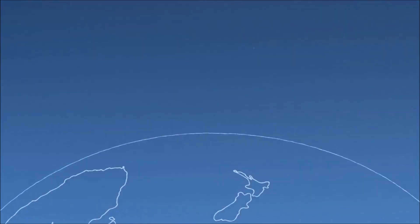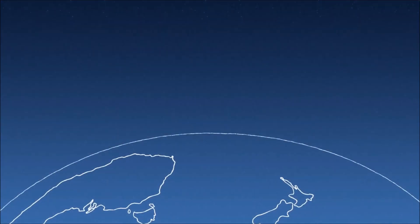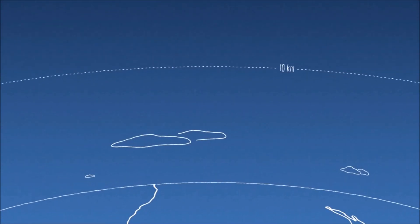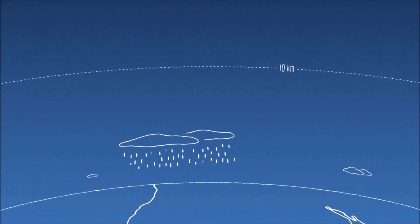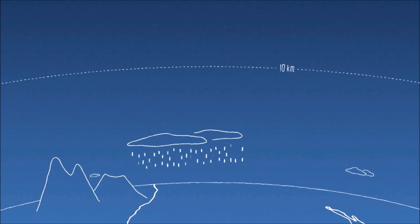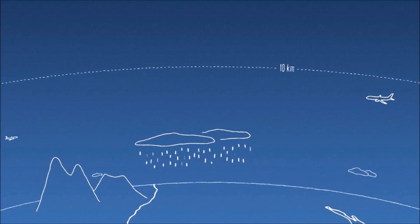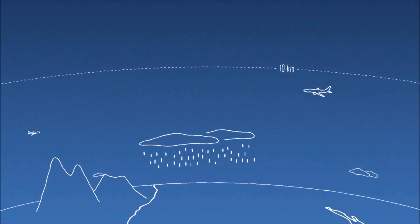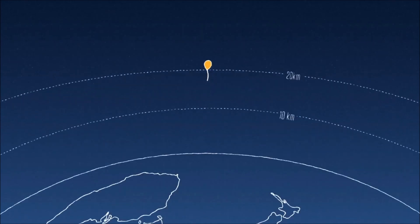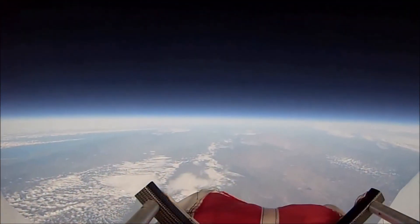Here's the surface of the planet. From here, right up to about 10 kilometers — this is where rain happens, this is where mountains are, and pretty much all aircraft fly down here. Now, here's our little balloon up here. This is right around 20 kilometers — we're actually in the stratosphere.